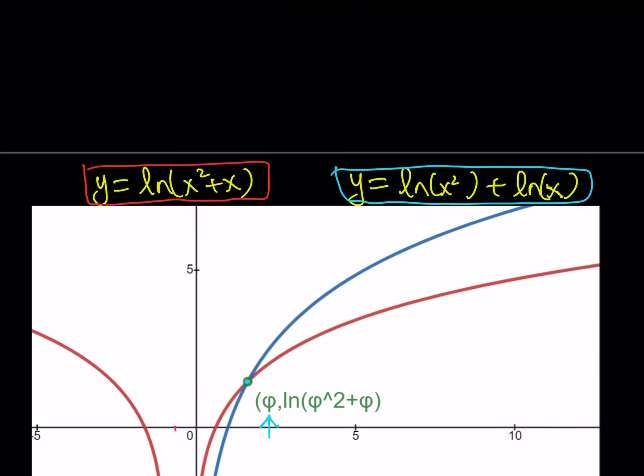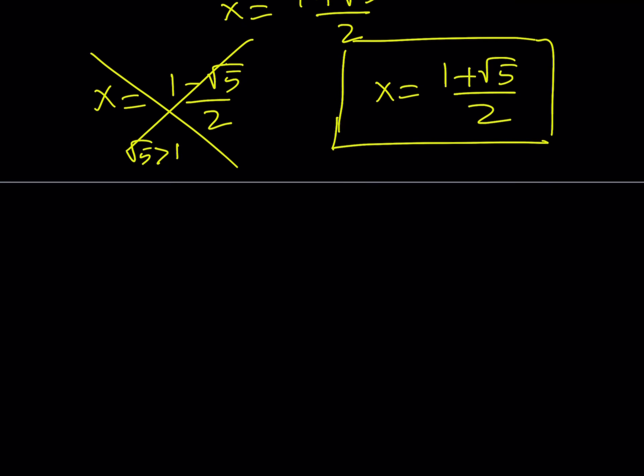And the x coordinate is going to be the golden ratio. So our solutions, or the only solution that we get from this equation, is 1 plus root 5 divided by 2. And this brings us to the end of this video.